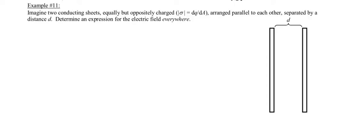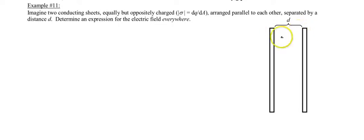Example number 11. We have two parallel infinite conducting planes, and they're separated at a distance d. Each plane is uniformly charged with equal but opposite surface charge densities, and we're asked to find the electric field everywhere in space.